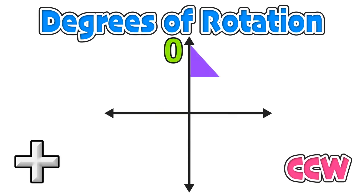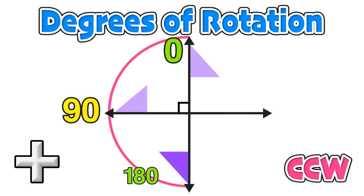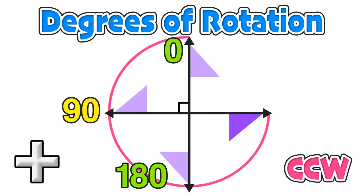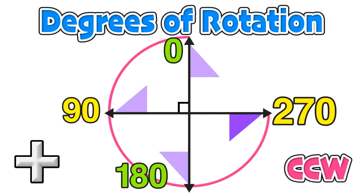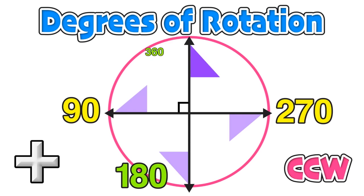A positive degree of rotation is a counterclockwise movement. Starting with a figure, one quarter turn is equivalent to a 90-degree rotation. A second quarter turn adds another 90, giving 180 degrees. A third quarter turn is 270 degrees. A final quarter turn brings the figure back to where it started, completing the full 360 degrees.